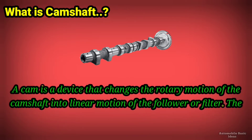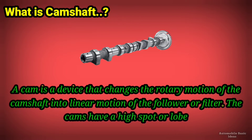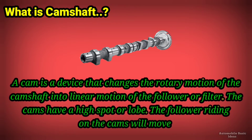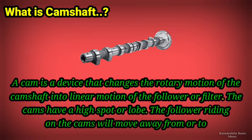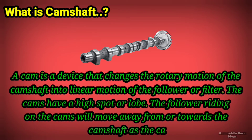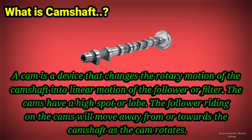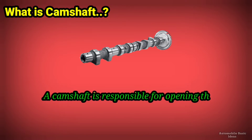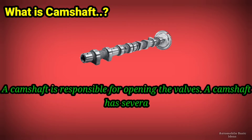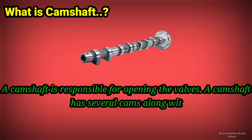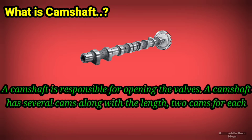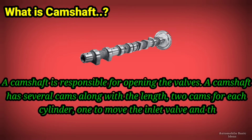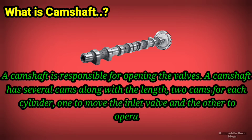The cams have a high spot or lobe. The follower riding on the cams will move away from or towards the camshaft as the cam rotates. A camshaft is responsible for opening the valves. It has several cams along its length — two cams for each cylinder: one to move the inlet valve and the other to operate the exhaust valve.